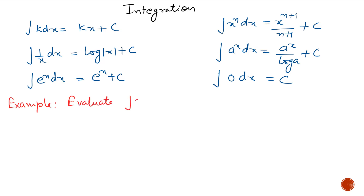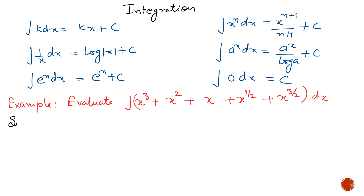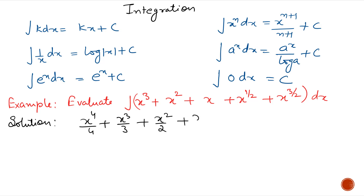Example 1: Evaluate integration of x³ + x² + x + x^(1/2) + x^(3/2) with respect to x. The answer is x⁴/4 + x³/3 + x²/2, and the integration of x^(1/2) is x^(3/2) upon 3/2, and the integration of x^(3/2) is x^(5/2) upon 5/2, plus c.